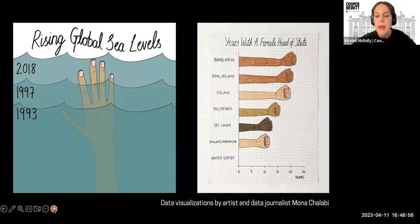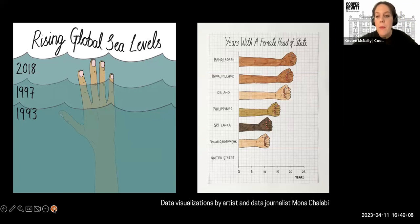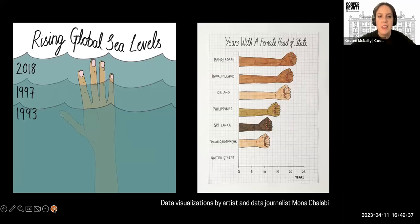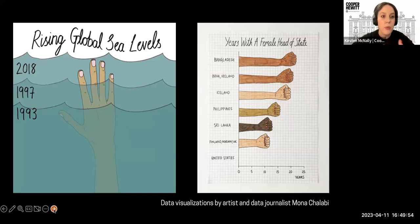On the screen are two data visualizations by the artist and data journalist Mona Chalabi. On the left, a hand that appears to be drowning measuring rising global sea levels over time. On the right, a bar graph made of fists showcasing the number of years different countries have had with female heads of state. These are good examples of what we're calling data storytelling, because while they don't give us every single detail, they use data to evoke an emotional response. Mona rehumanizes data to help us better understand our world. We often associate data with something cold and unrelated to human life, but in fact data offers so much about speaking to our human condition — and Du Bois was at the forefront of this.